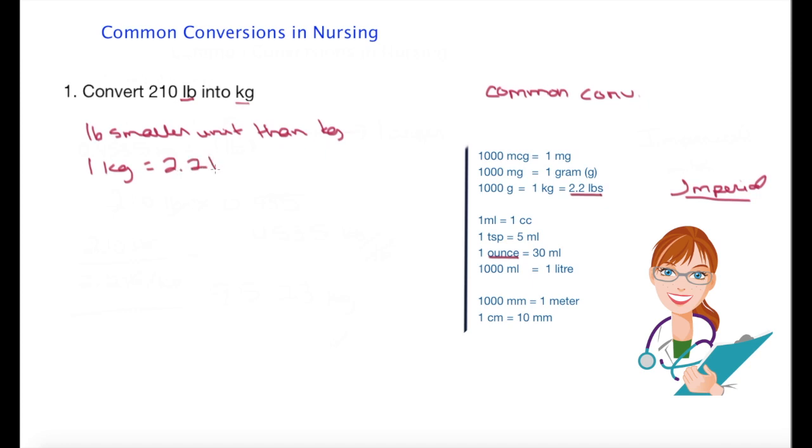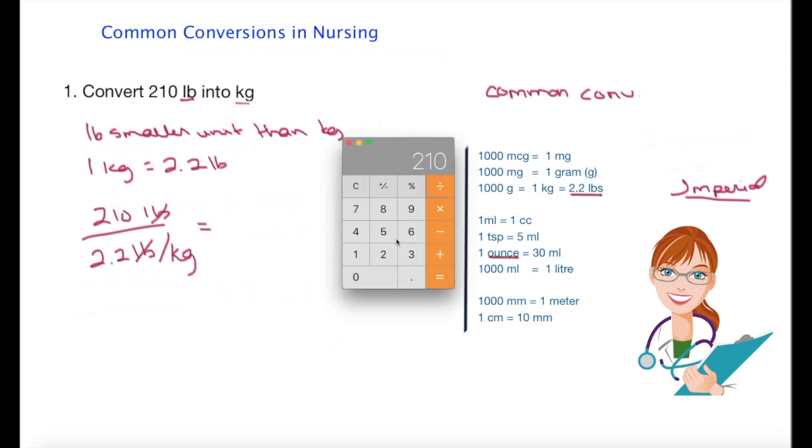I know from my conversion chart that when I am moving from a smaller unit to a larger unit, I'm going to divide. So 210 pounds divided by 2.2 pounds per kilogram - I cross off my pounds, complete the calculation.